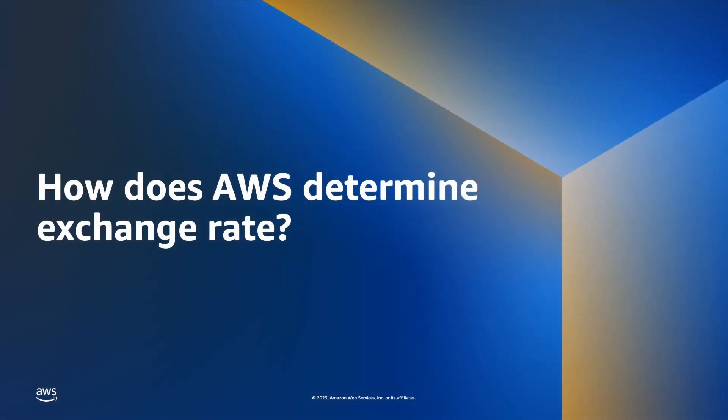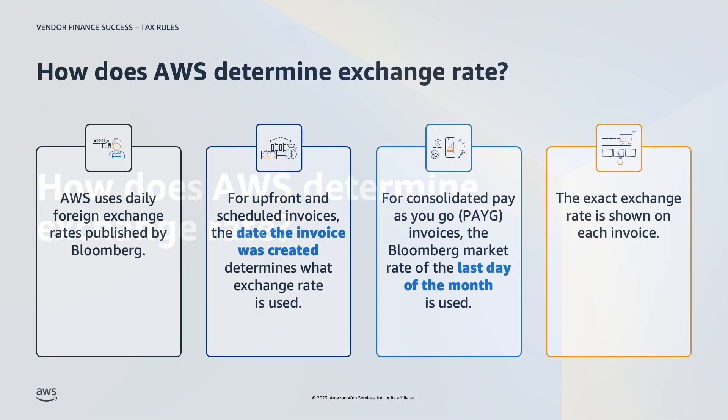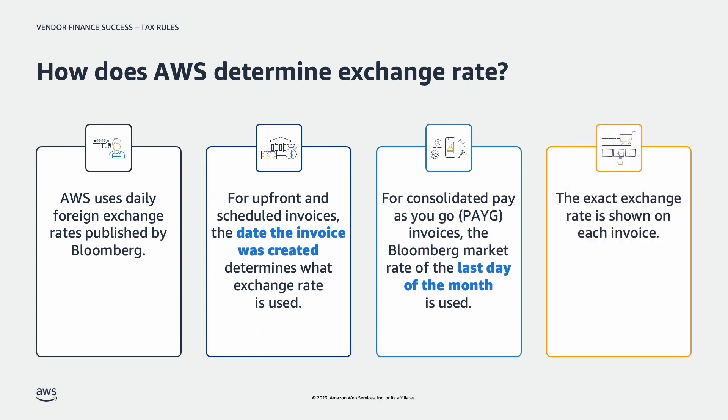How does AWS determine exchange rate? AWS uses daily foreign exchange rates published by Bloomberg to calculate the exchange rates used to convert invoices. The type of invoice determines when AWS assesses the Bloomberg market rate. For upfront and scheduled invoices, AWS uses the Bloomberg market rate when the invoice is created. For consolidated pay-as-you-go invoices, the Bloomberg market rate from the last day of the month is used. The exact exchange rate is shown on each invoice.